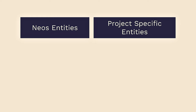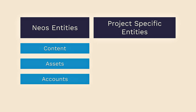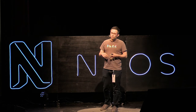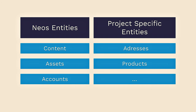When you develop your project with Neos, there are some entities already covered by the code — for example, content, assets, and accounts. If you use the methods and repositories provided there, you're pretty safe with scaling because these methods are proven and constantly improved by the community and tested for scalability in large projects. And then there are your customer-specific things like addresses and products that you build yourself, but there you're supported with good interfaces and implementations in Flow and Doctrine, which also helps you write scalable code.